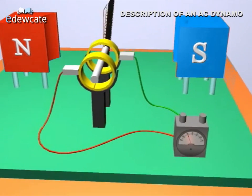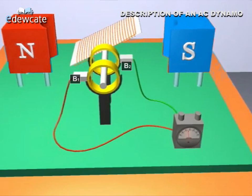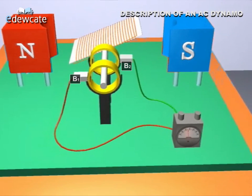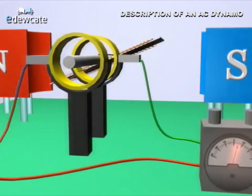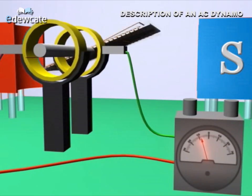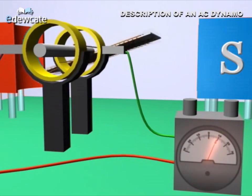Two carbon brushes, B1 and B2, are always in contact with the slip rings S1 and S2 respectively. The other two ends of B1 and B2 are connected to an external circuit containing load resistance R.